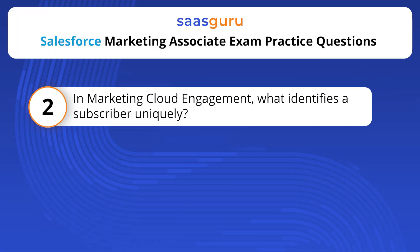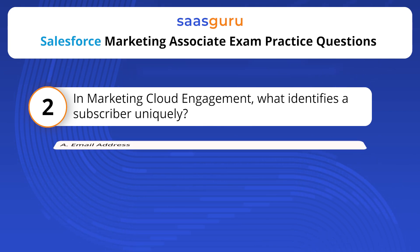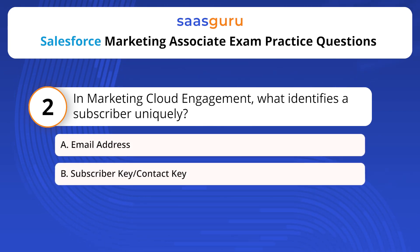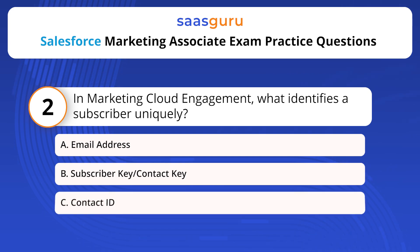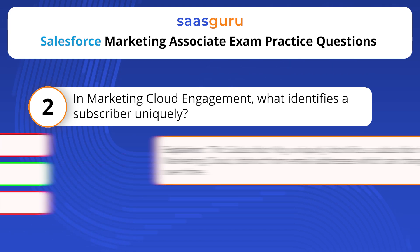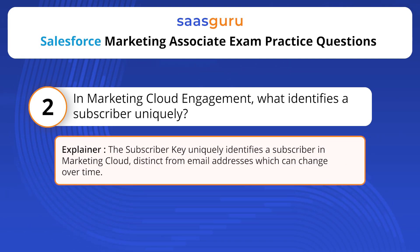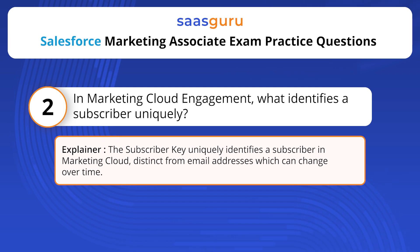In Marketing Cloud Engagement, what identifies a subscriber uniquely? Options include: Email address, Subscriber key, Contact key, Contact ID. The answer is option B — Subscriber key. The Subscriber key uniquely identifies a subscriber in Marketing Cloud, distinct from email addresses which can change over time.